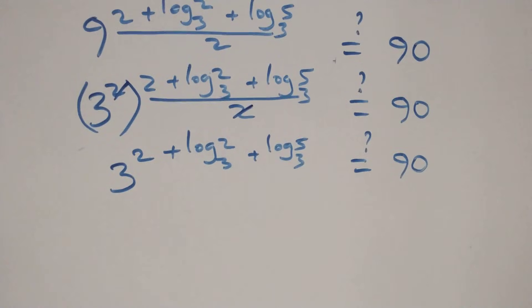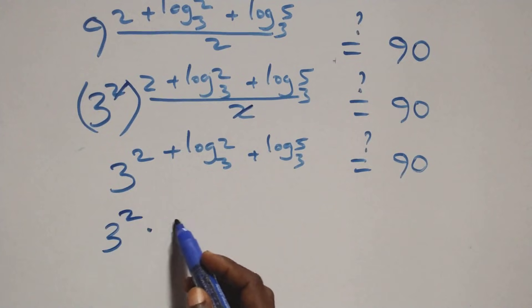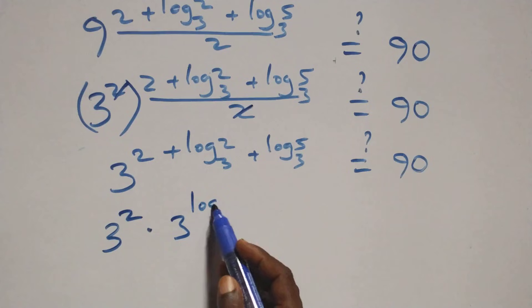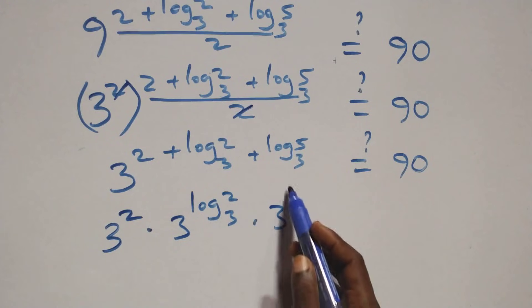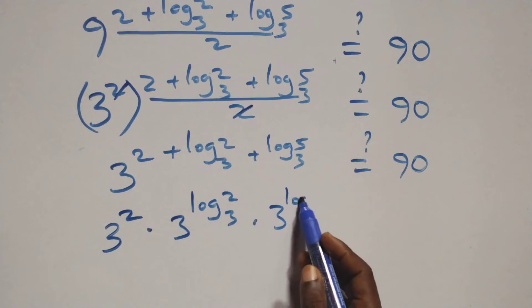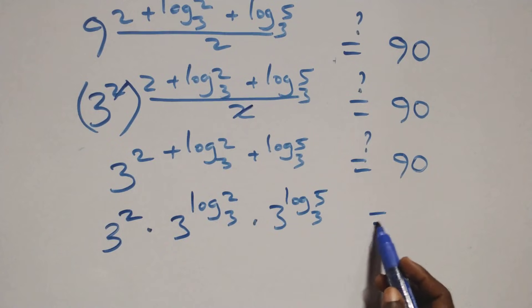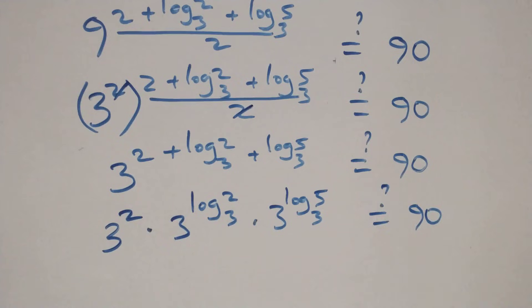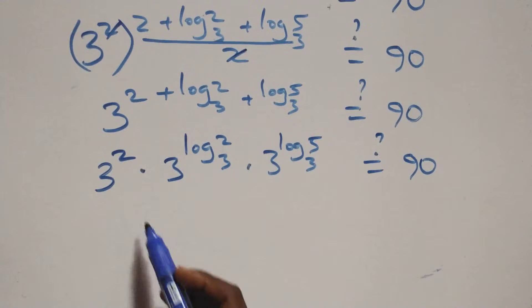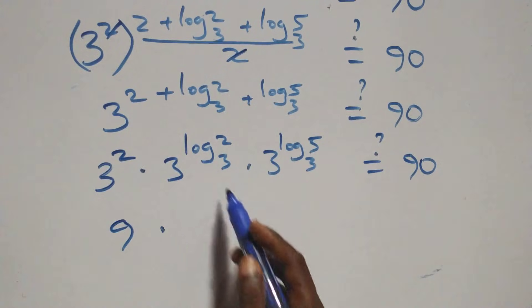Applying the indices law, we write this as 3 squared times 3 raised to the power log base 3 of 2, times 3 raised to the power log base 3 of 5, equals 90. And 3 squared is 9.